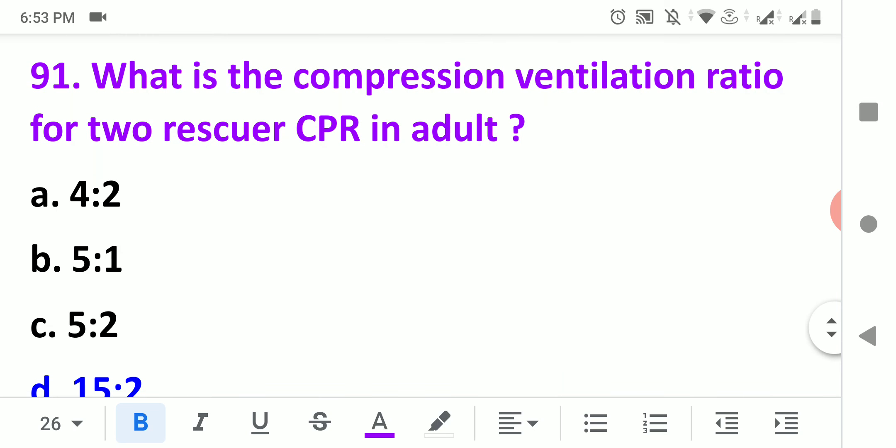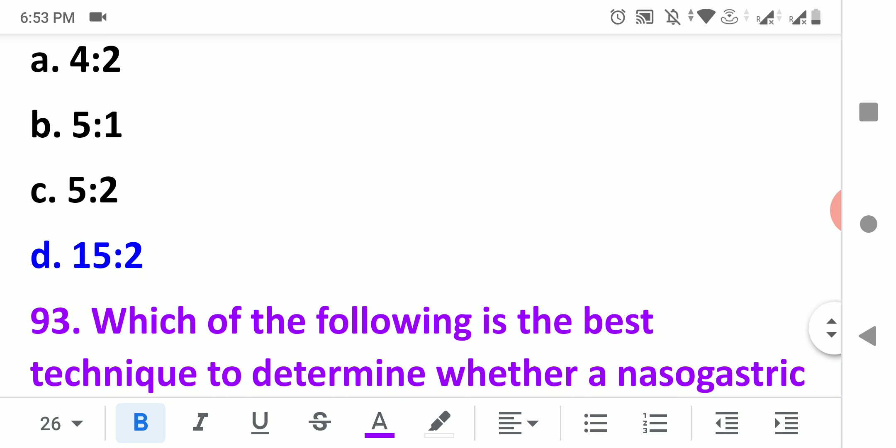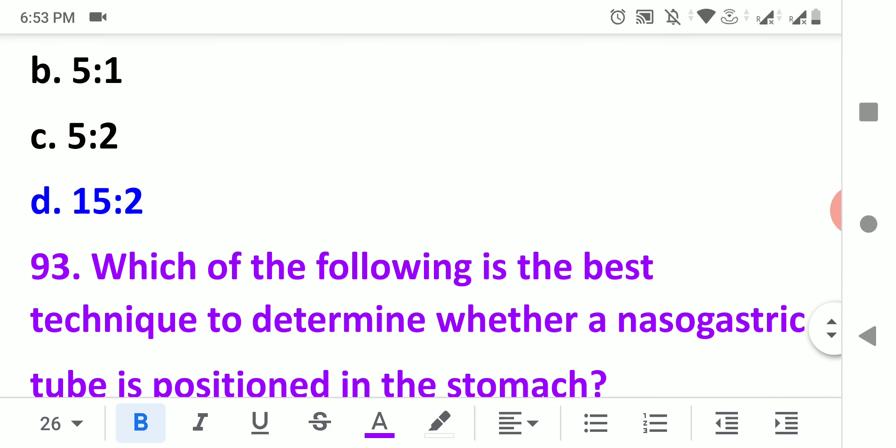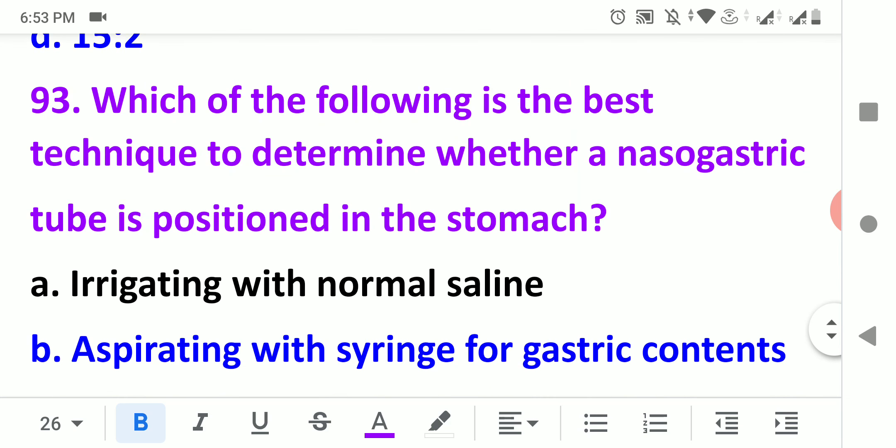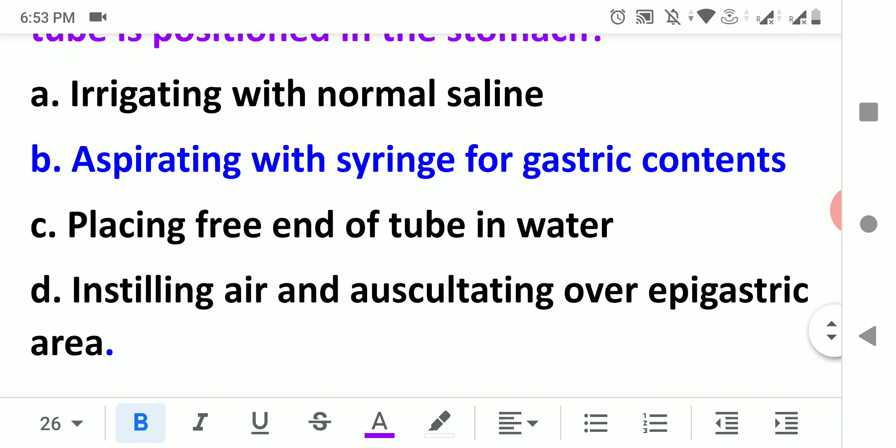In an underwater seal drainage system, cessation of fluid fluctuation in the drainage tube generally means that the lung has fully expanded. Which of the following is a complication associated with the presence of tracheostomy tube? Tracheal stenosis can occur. Which of the following is the best technique to determine whether a nasogastric tube is positioned in the stomach? Aspirating with syringe for gastric content is the best method.